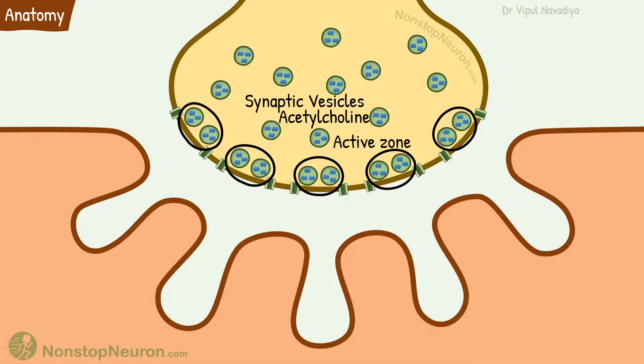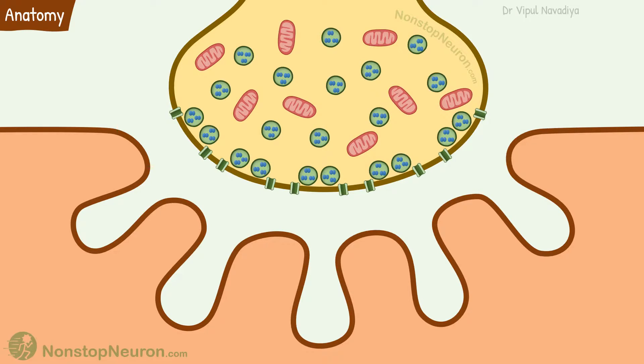The membrane near the active zone contains voltage-gated calcium channels. There are also many mitochondria in the nerve terminal. They supply the ATP required for synthesis of acetylcholine.